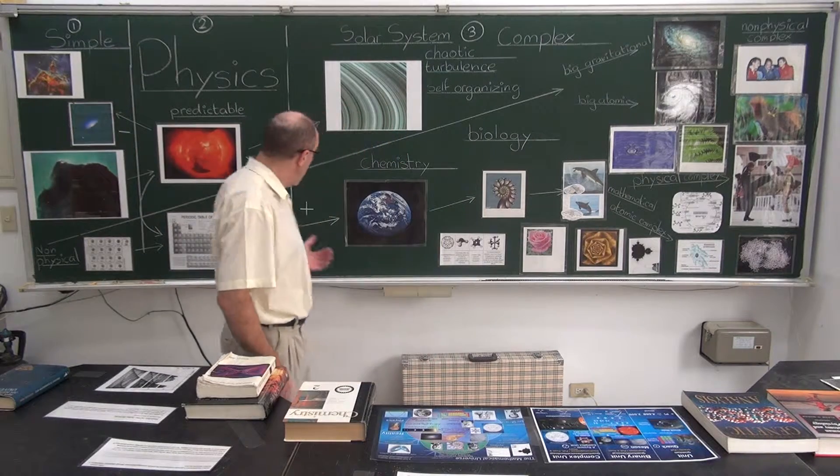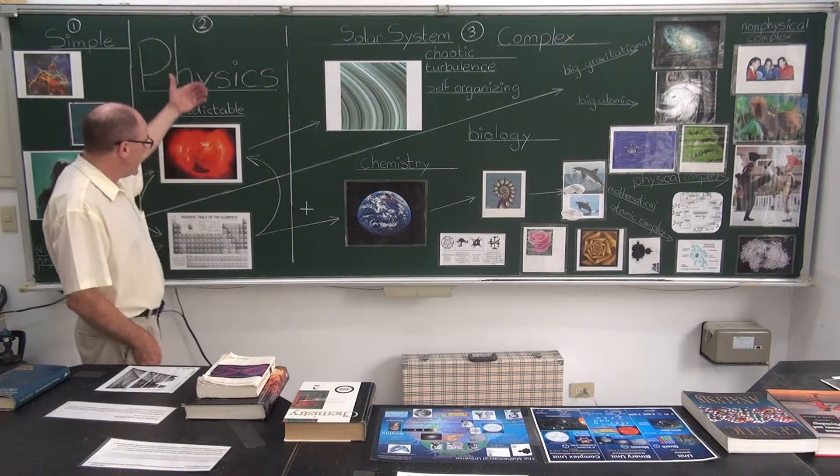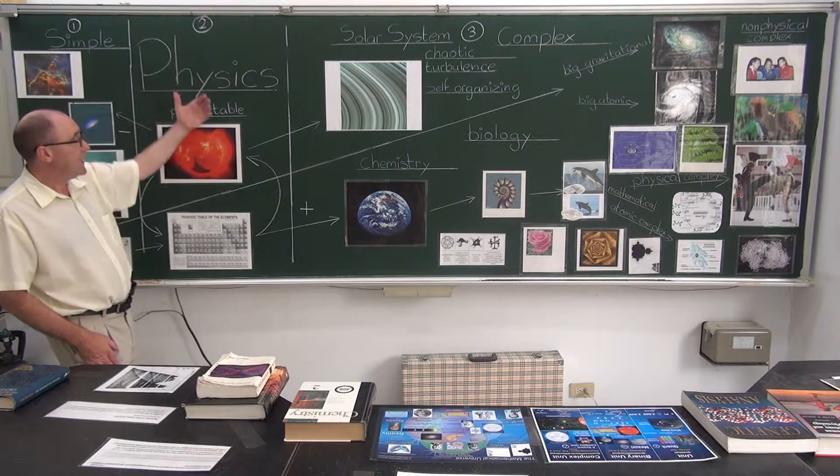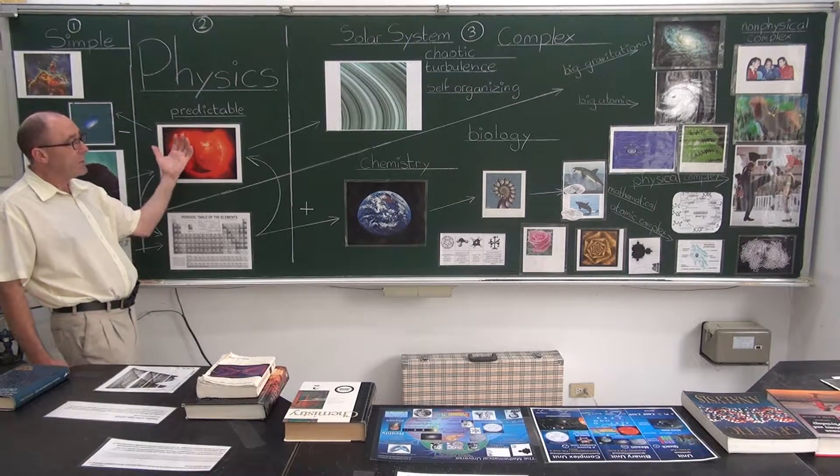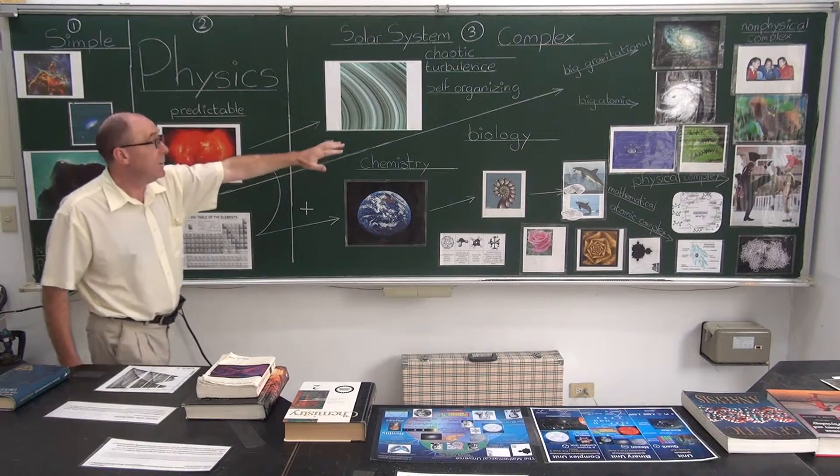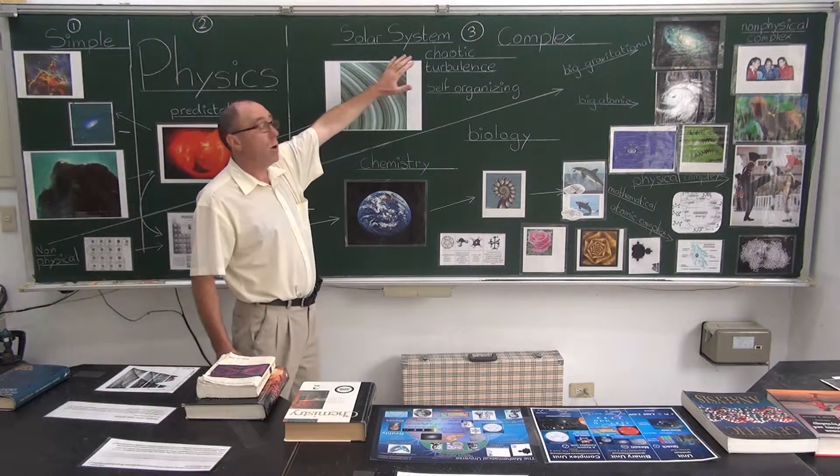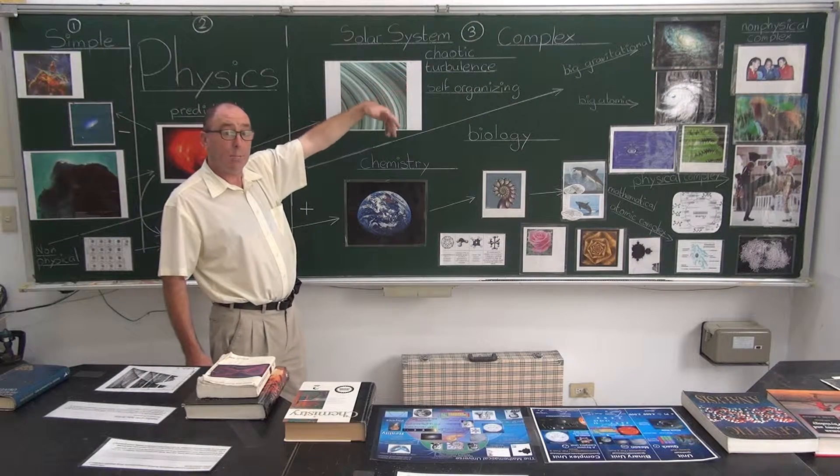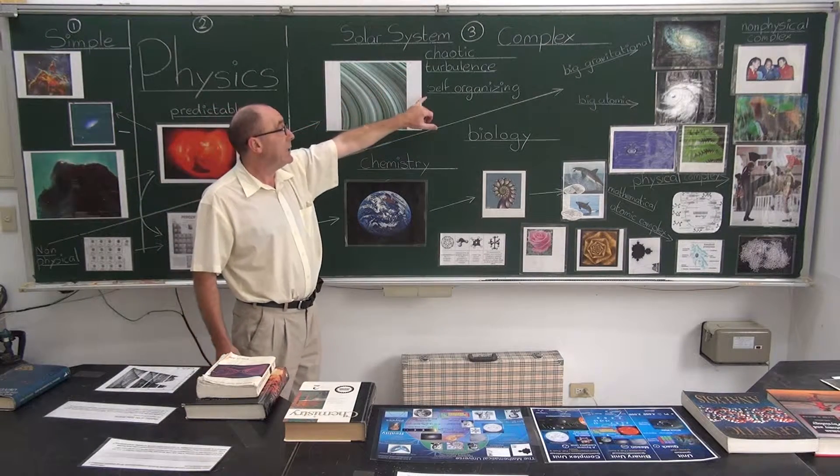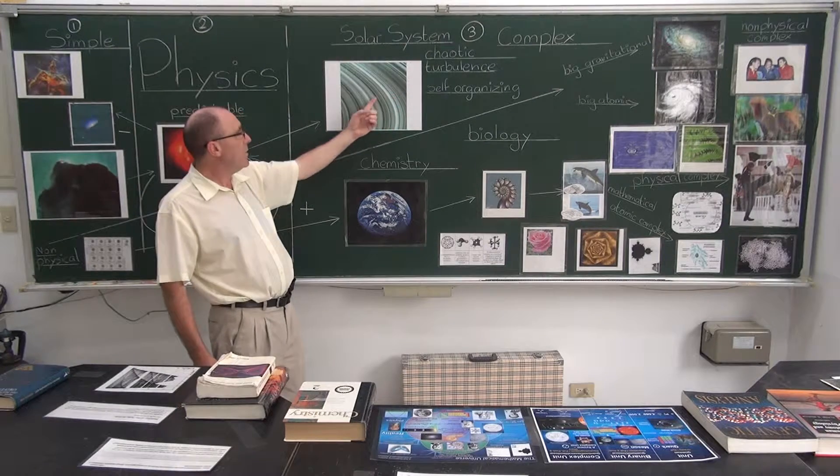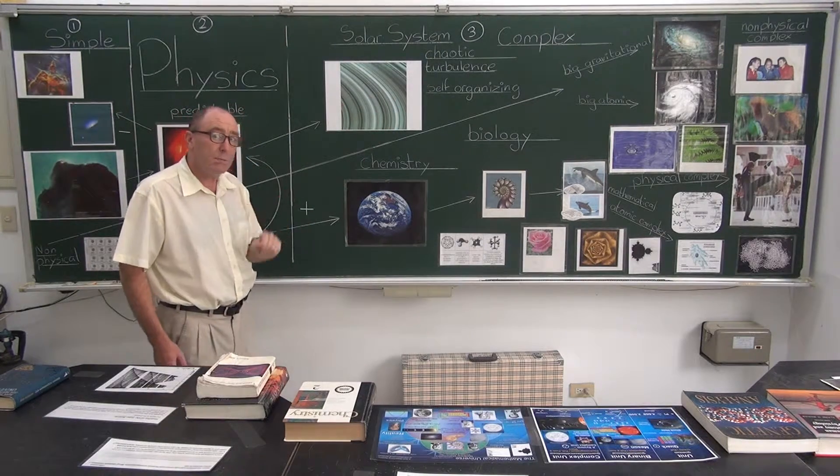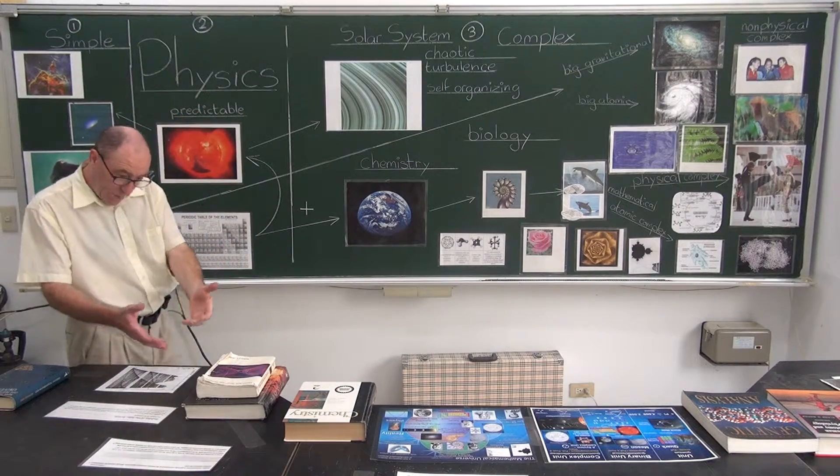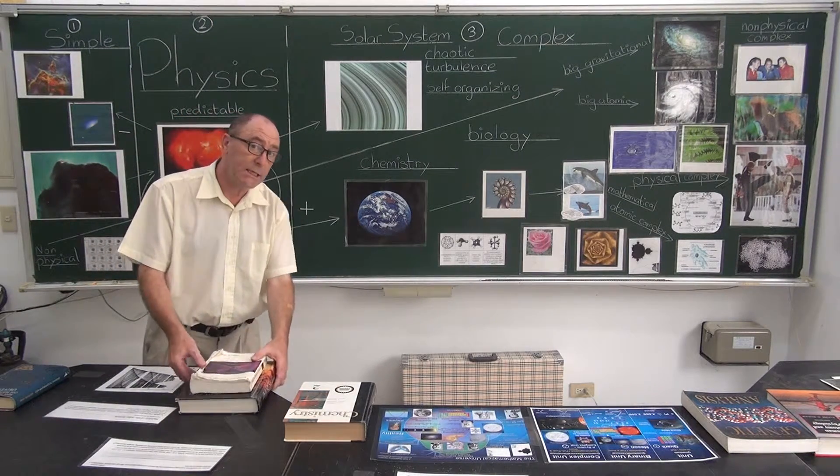So, if I go back here, my physics, predictable physics, just stays here. Very quickly, when I get to three components of the solar system, I go into complex behaviour, which can be chaotic. Or if I've got a big dominant body like Mars and its two moons, I get self-organising. But inside here, it's chaotic. But it doesn't matter. I've got a description now, which is consistent.